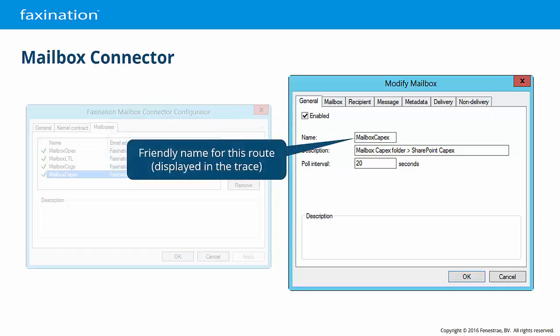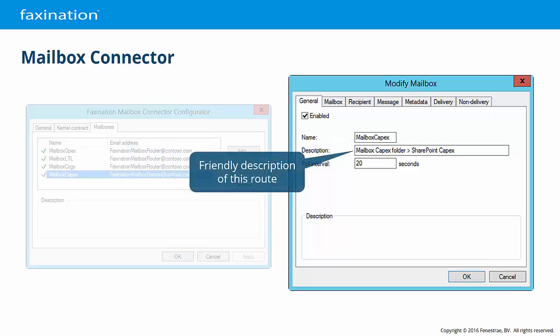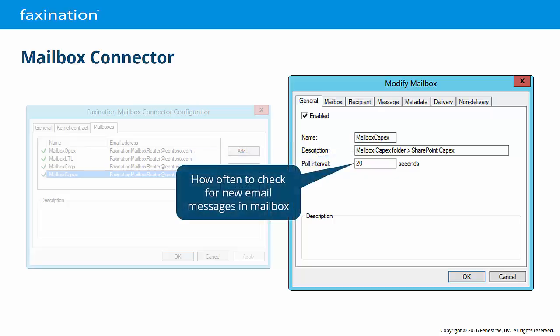Name is the friendly name for this configuration. This name will appear in the mailbox connector trace when this mailbox configuration is active. A description field is provided for administrator reference; it's not used by Faxonation. You can also set the interval between checks of the mailbox folder for new messages. The default is 20 seconds.